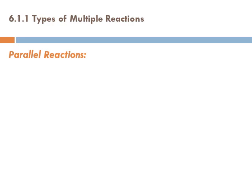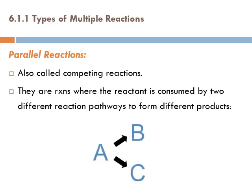The second type is parallel reactions, also called competing reactions. They are reactions where the reactant is consumed by two different reaction pathways to form different products — A could go to B or C. There is competition in which reaction happens faster and which product will be formed more. That is why they are called competing or parallel reactions.